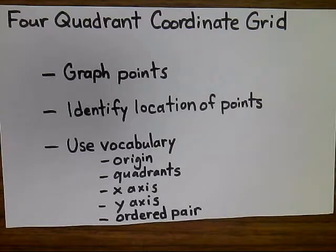This video is about the four quadrant coordinate grid. There are three main goals that I want to go over: for you to be able to graph points in a four quadrant grid, identify the location of those points, and to use appropriate vocabulary including the words origin, quadrants, x-axis, y-axis, and ordered pair.